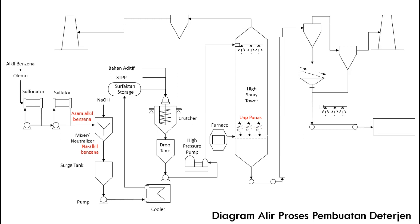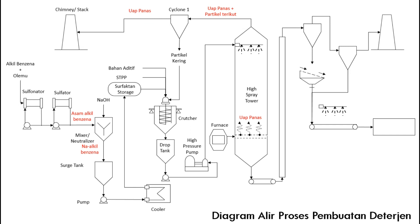Uap panas yang naik melewati spray kemudian dialirkan menuju ke cyclone 1. Cyclone 1 berfungsi untuk memisahkan uap panas dan juga partikel yang terikut. Partikel yang terikut ini nantinya akan dimasukkan ke dalam crutcher sebagai bahan baku awal. Sedangkan uap panas akan dilepas ke atmosfer, tetapi sebelumnya dialirkan menuju ke chimney stack atau cerobong terlebih dahulu.